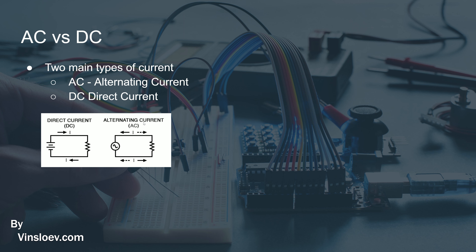Whereas alternating current is multiple times throughout the circuit switching direction back and forth.